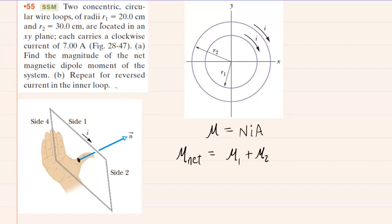We will see in part B that the current in the inner loop has been reversed. The directions will be opposite, and rather than adding the two magnetic dipole moments, we'll have to subtract them. But, back to part A, in which the currents are both clockwise, we will simply add the magnetic dipole moments.